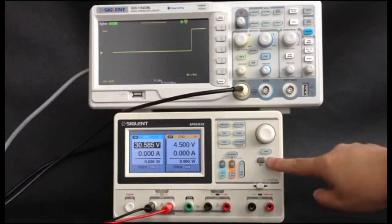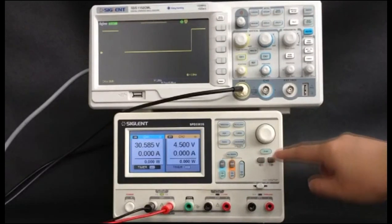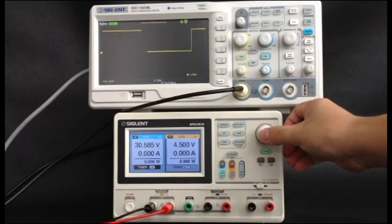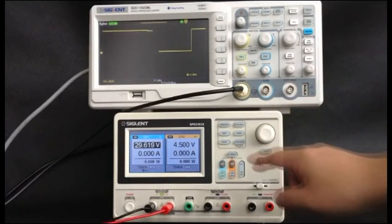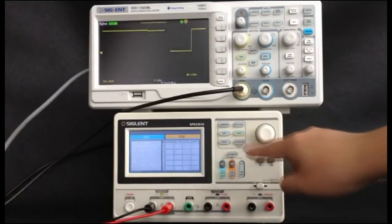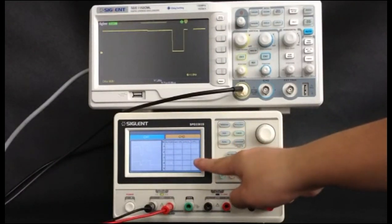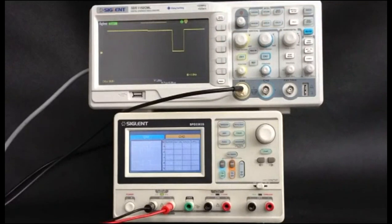Move cursor to timer menu by pressing the direction button. Revolve the multifunction knob to make the timer state to on. The output changes according to the value set by the timer output. Then send the signal to the oscilloscope.